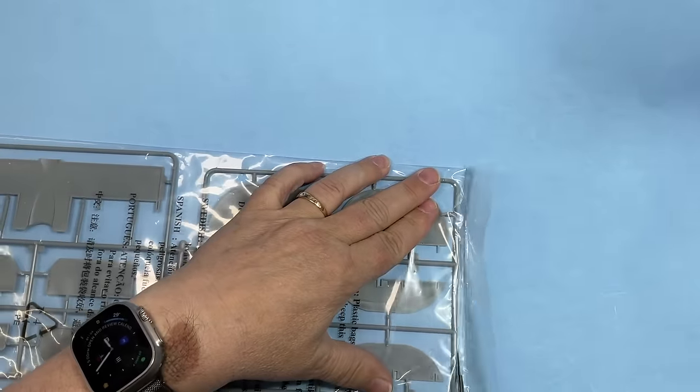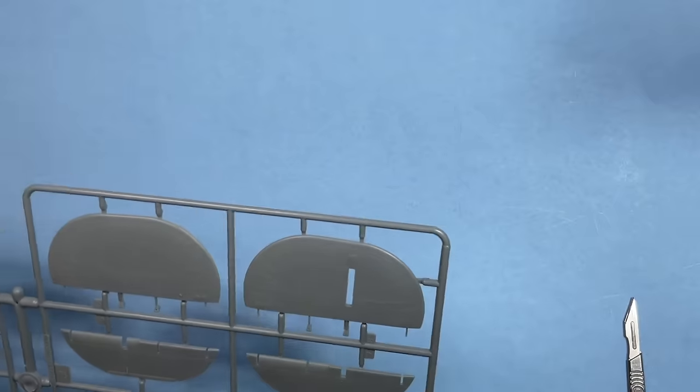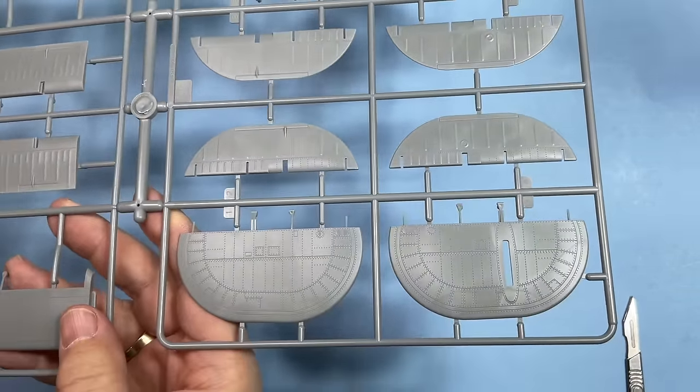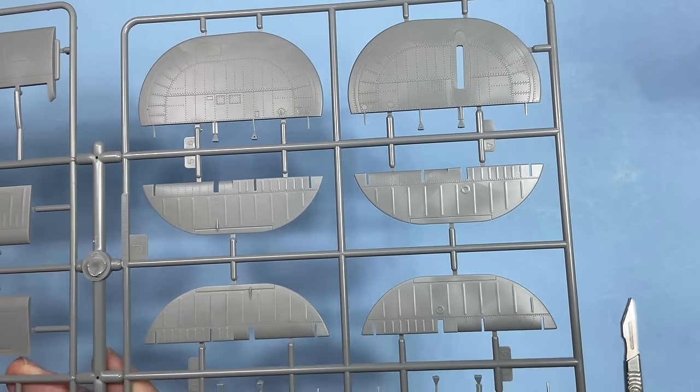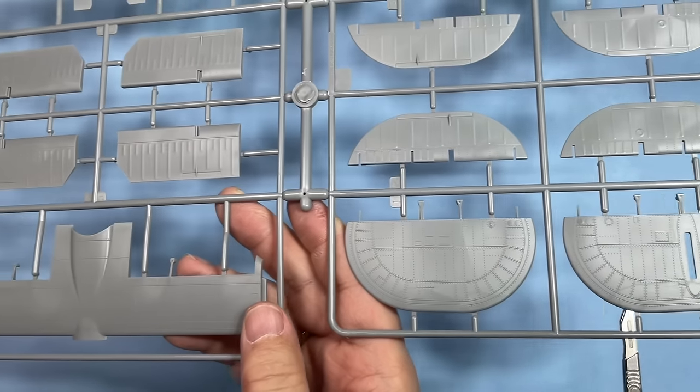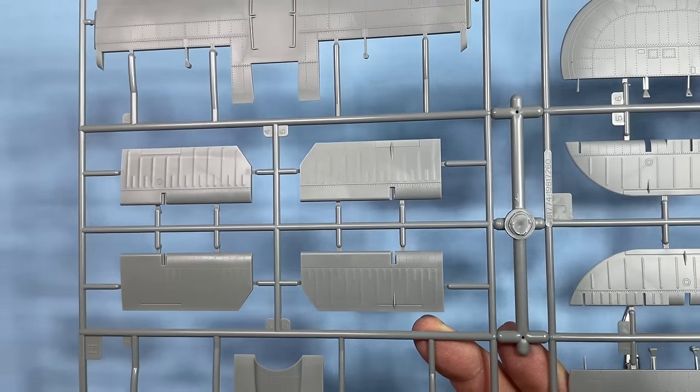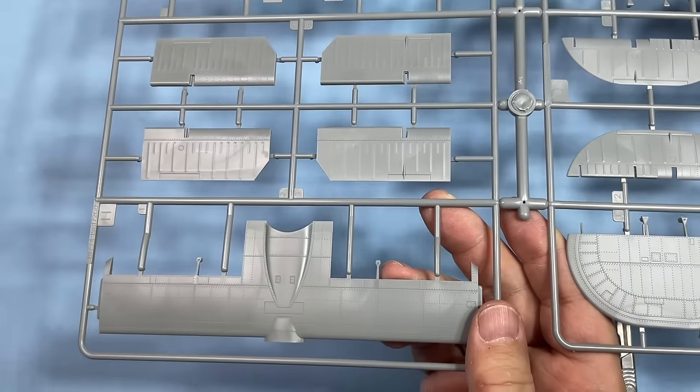Those might actually be the flaps, not the tail section elevator, because it seems awful long for it to be the elevator. Here we go, here's the tail section and the center elevator on sprue J and H. There's your tails, your rudders - again excellent rivet detail. They took their time with this, made it look right.